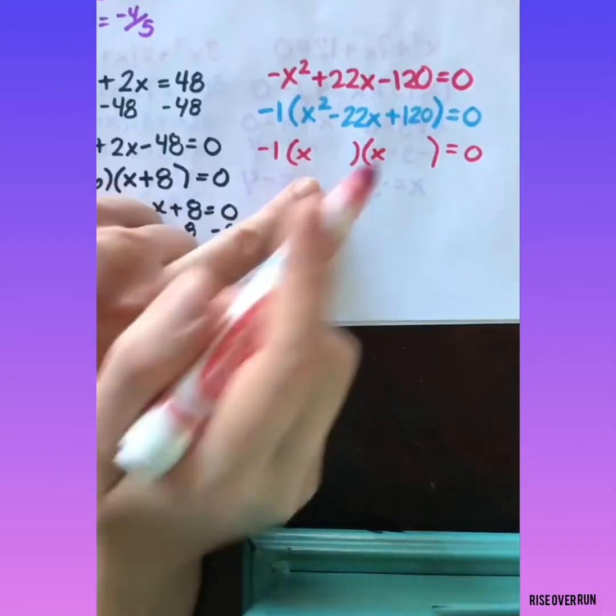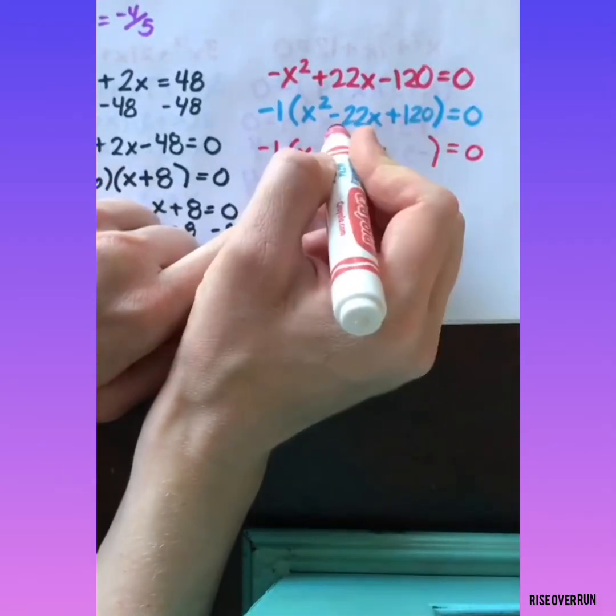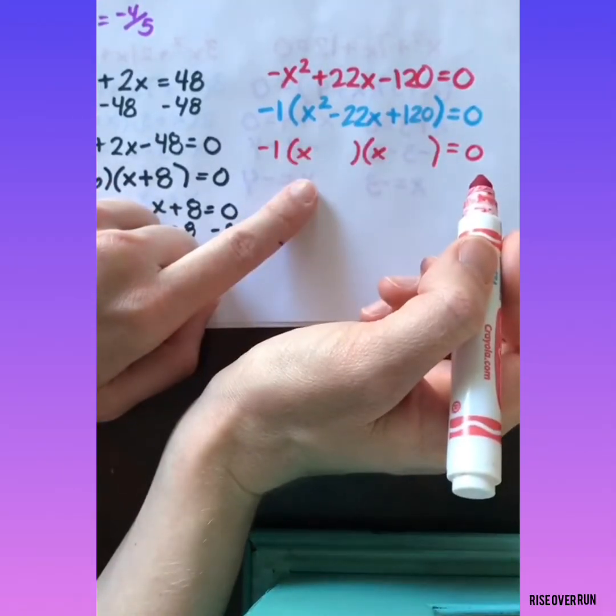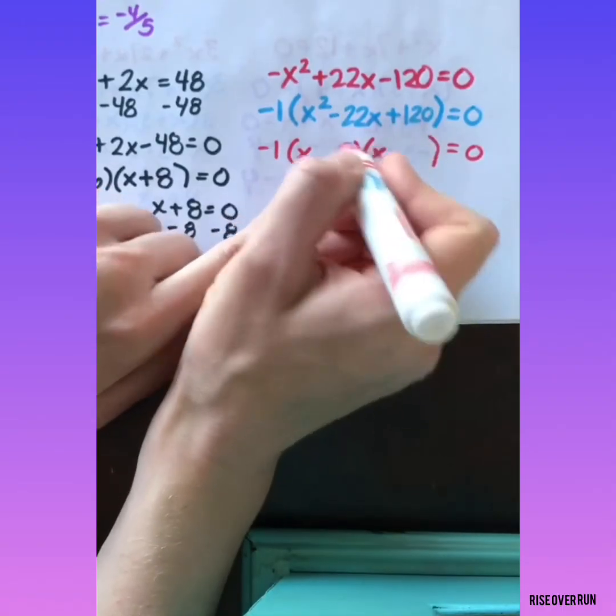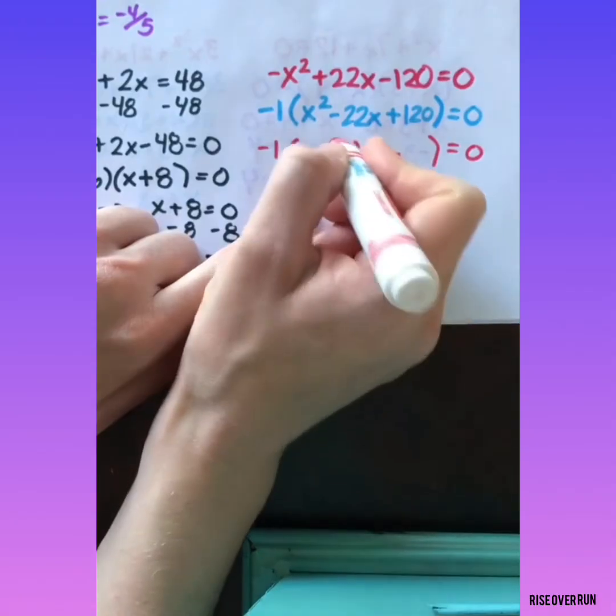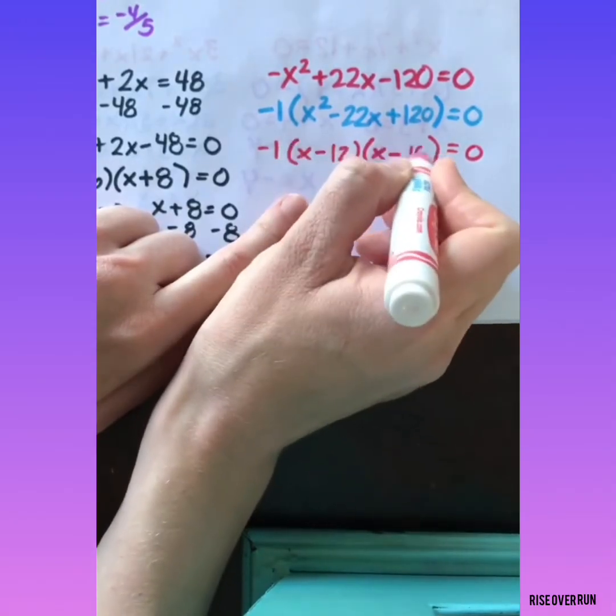Now I can factor what's in the parenthesis. I'm looking for two numbers that multiply to give me 120 and add to give me negative 22. If they're going to add to give me a negative but multiply to give me a positive, that means they're both negative. 12 and 10 will work.